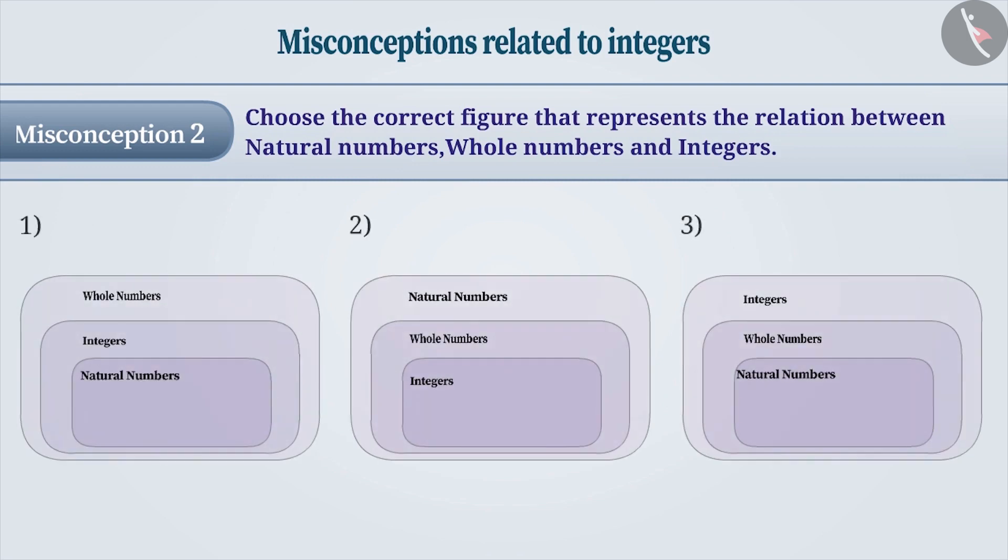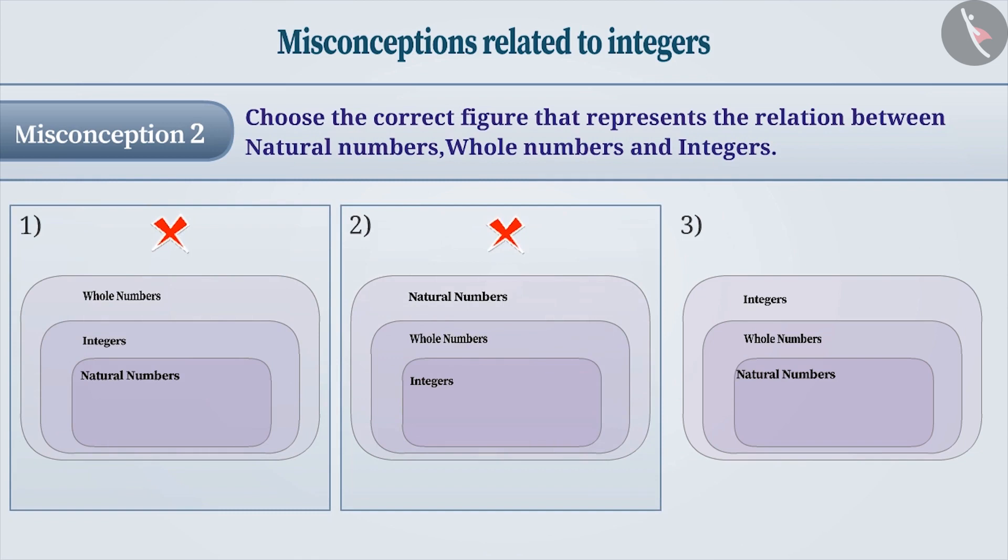Sometimes it is difficult to find the relation between these three sets of numbers. Often, options 1 and 2 are chosen, which are incorrect.